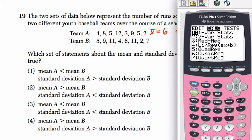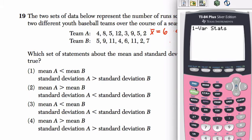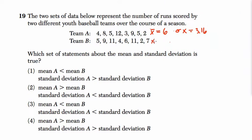We go back to stat, calc, one variable statistics, and now we do this for list 2. And now our mean is 6.875.